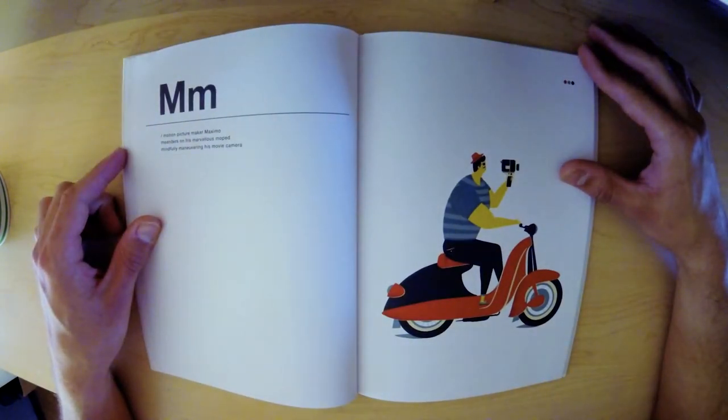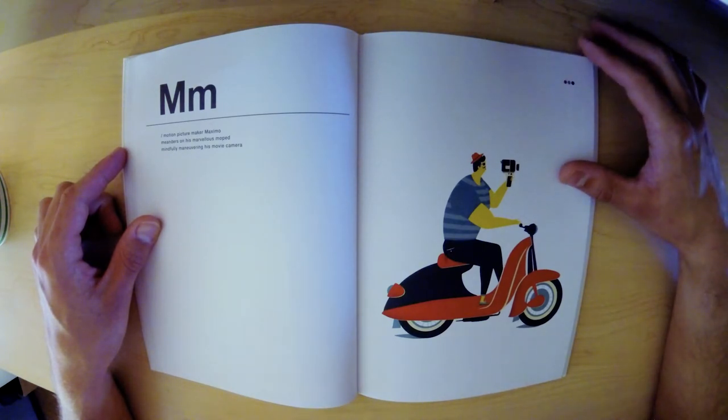M. Motion picture maker Maximo meanders on his marvelous moped mindfully maneuvering his movie camera.